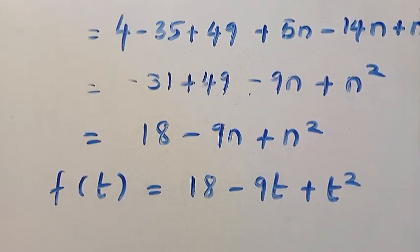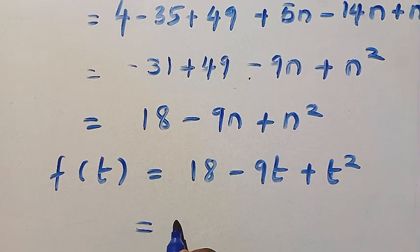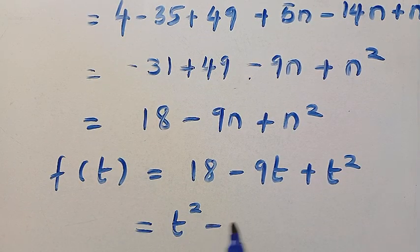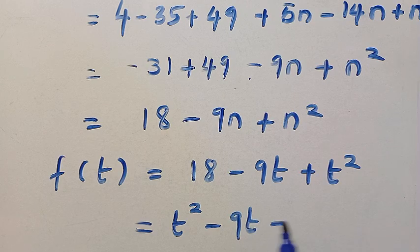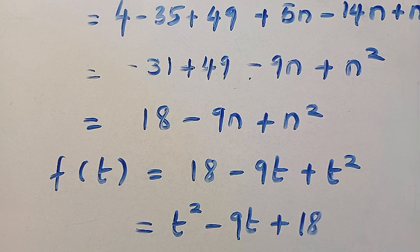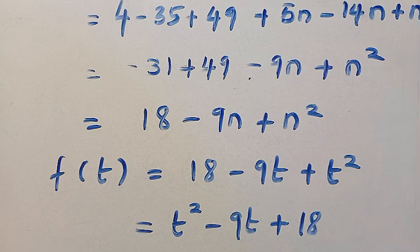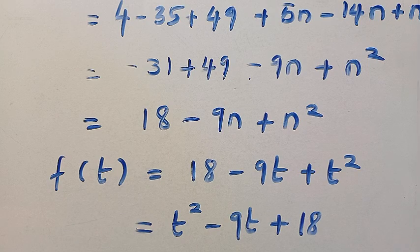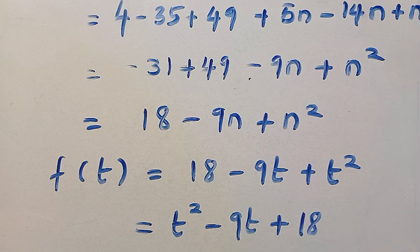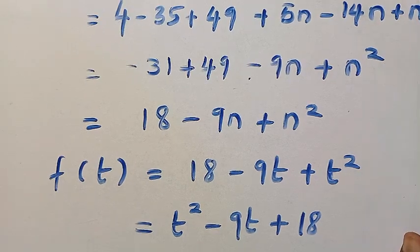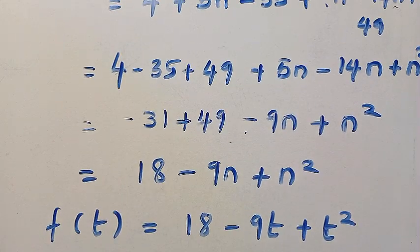Then by changing n to t, we have f of t equals t squared minus 9t plus 18. So this is how I solve this problem in two different ways. See you in the next class, and don't forget to subscribe to this channel.